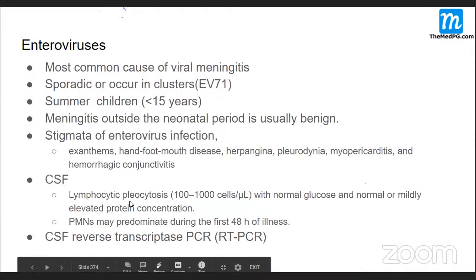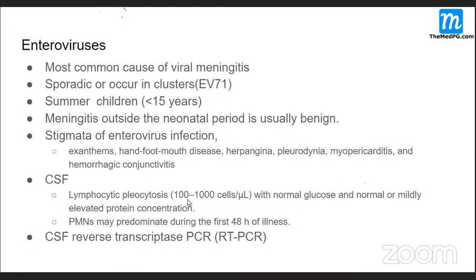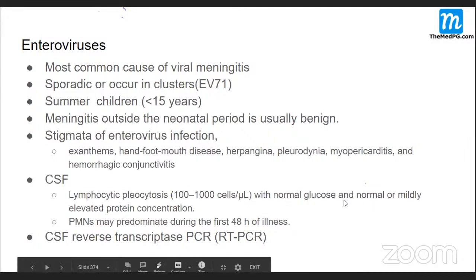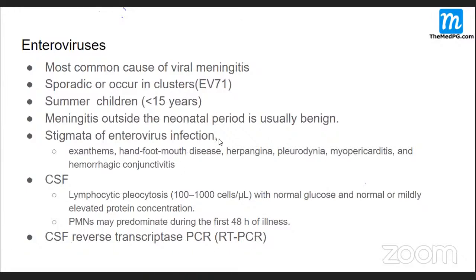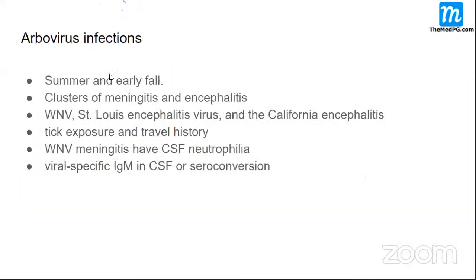In enteroviral meningitis, CSF shows lymphocytic pleocytosis with cell count of 100 to 1000, normal glucose, and mildly elevated protein. Polymorphs may be seen in the early 48 hours, later replaced by lymphocytes. CSF RT-PCR confirms the etiology.